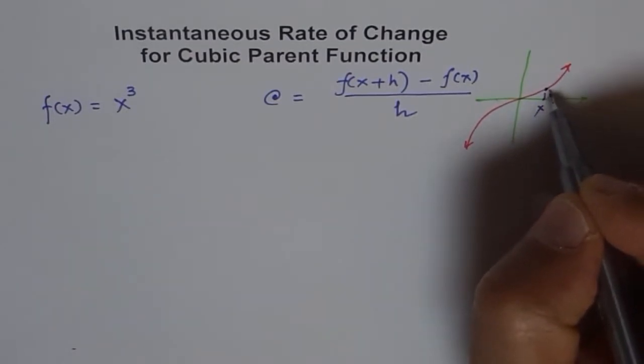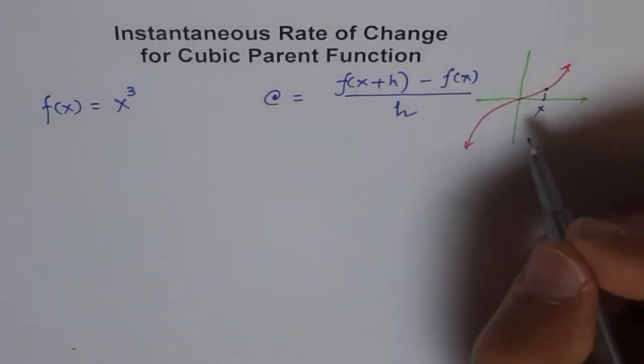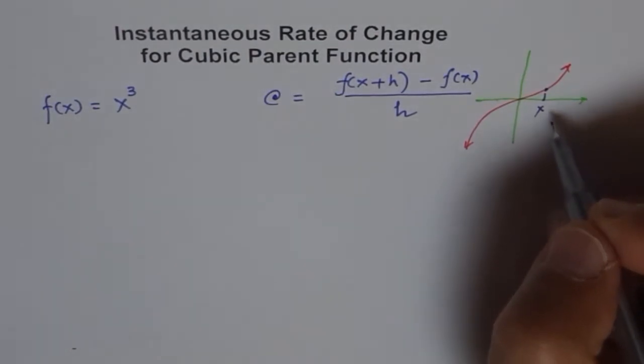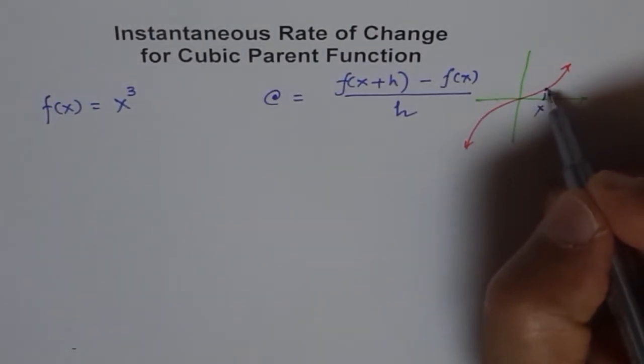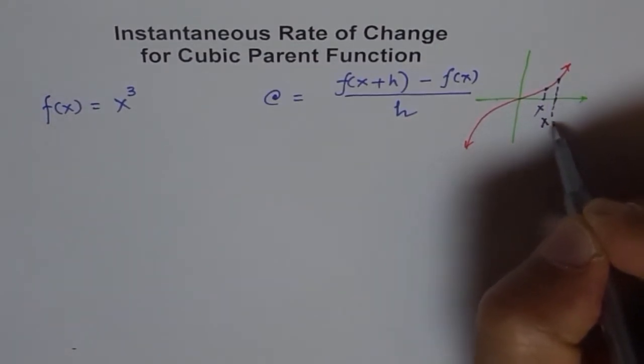Then we take another point which is very close to this point, and the distance away is h. Sometimes we write delta x. If I enlarge it, this is the point where my x value is x+h.